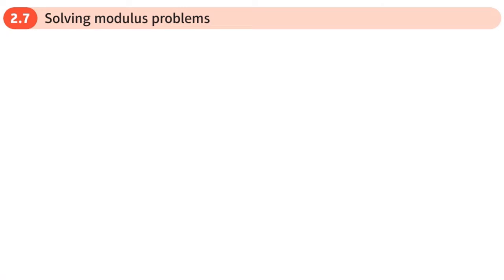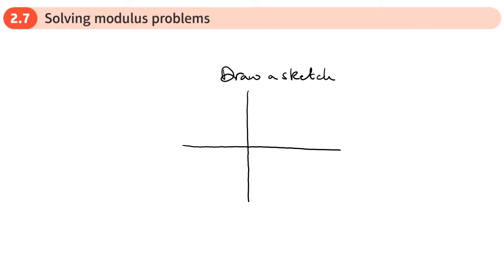This is the last section in the functions and graphs chapter: solving modulus problems. There's nothing new here. Quite often you might want to draw a sketch so you can see where the graphs cross. If you've got two modulus graphs, let's say one like this that reflects up, and another modulus graph that goes like this.